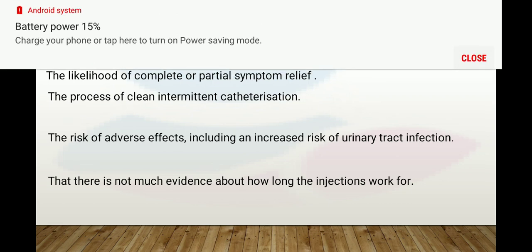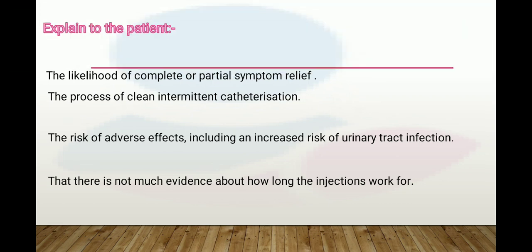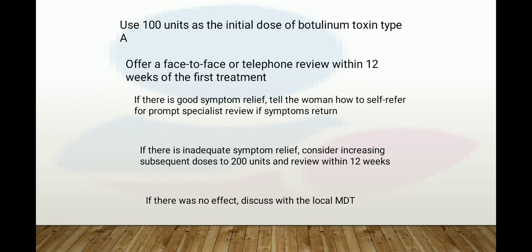Explain to the patient the likelihood of complete or partial symptom relief, the process of clean intermittent catheterization, and the risk of adverse effects including increased risk of urinary tract infection. Use 100 units as the initial dose of botulinum toxin type A. Offer face-to-face or telephonic review within 12 weeks of the first treatment. If symptoms return, tell the woman how to self-refer for specialist review. If there is inadequate relief, consider increasing the subsequent dose to 200 units and review within 12 weeks; if there are no effects, discuss with the local MDT.